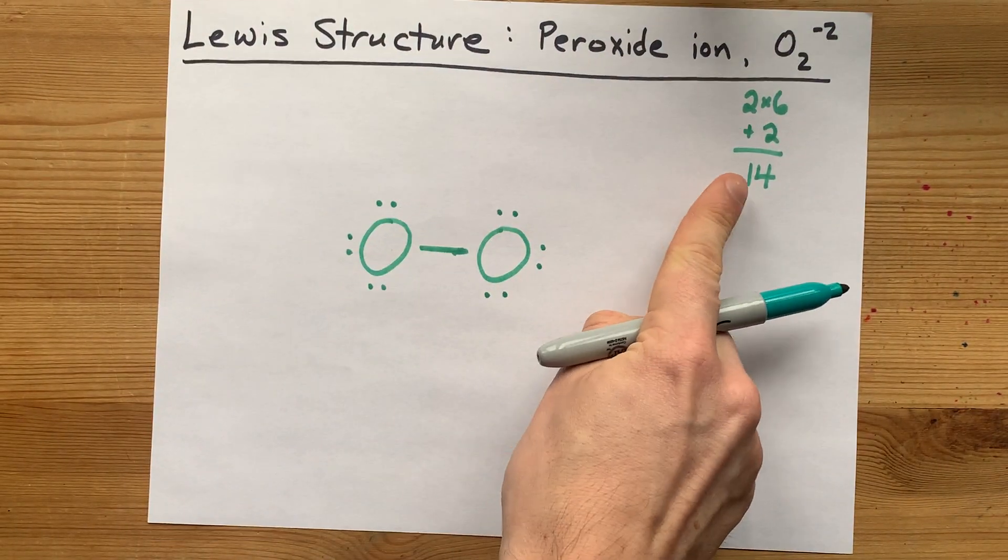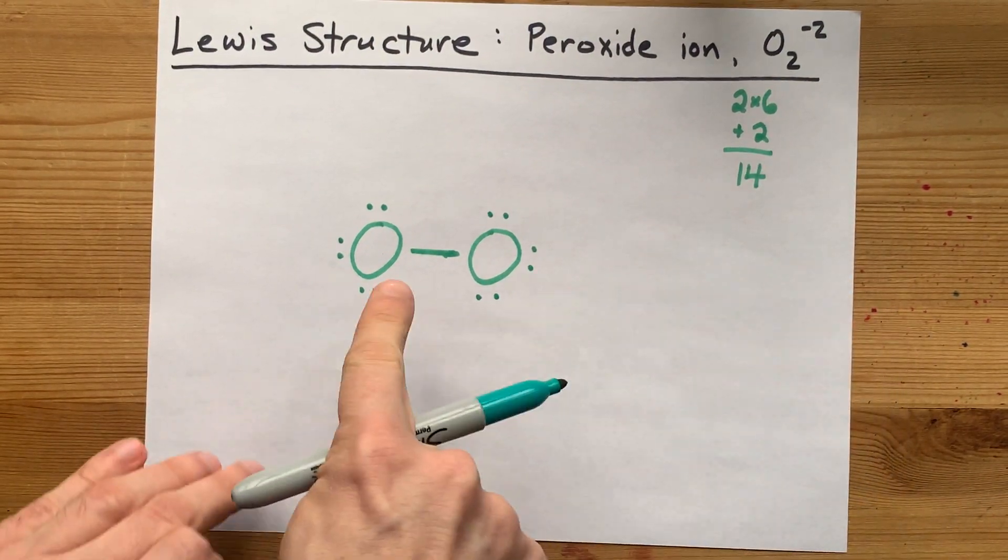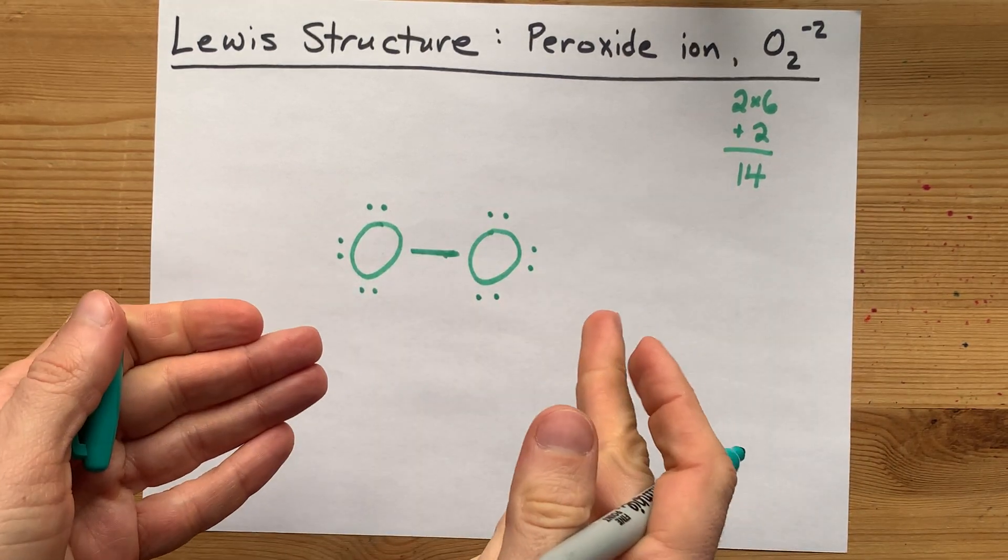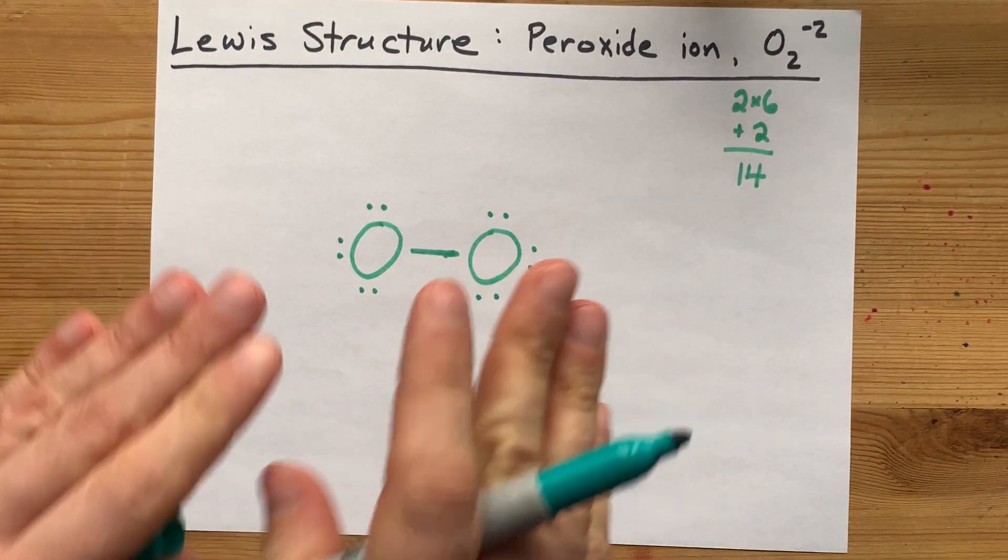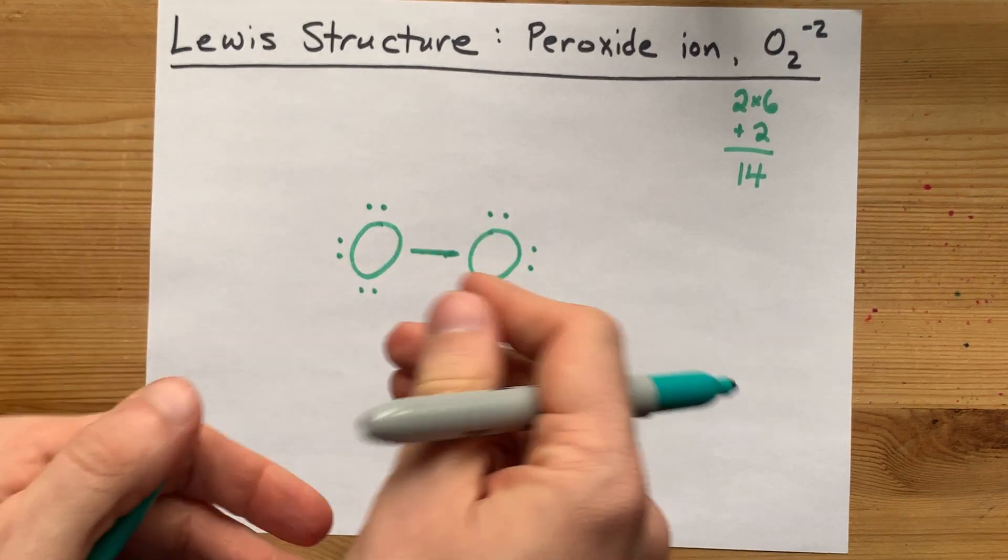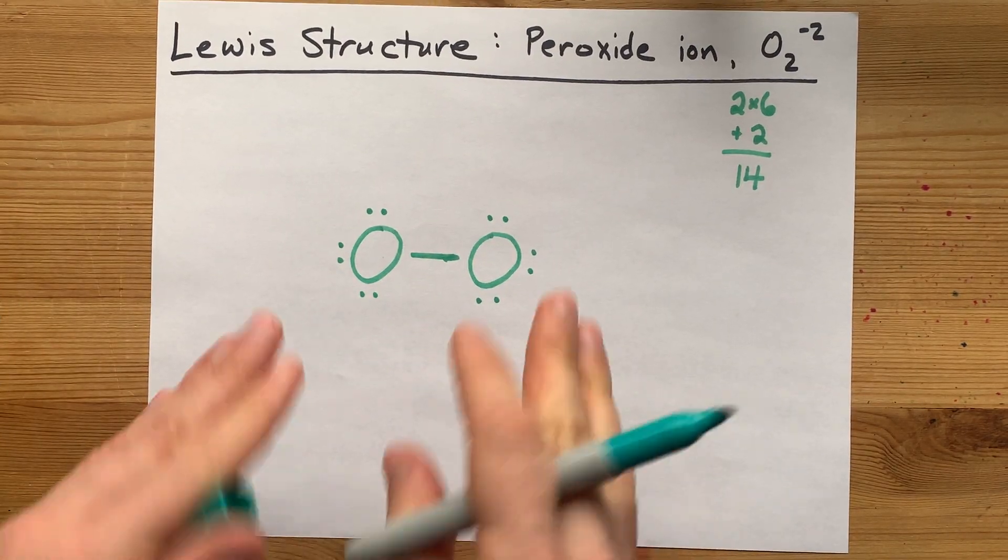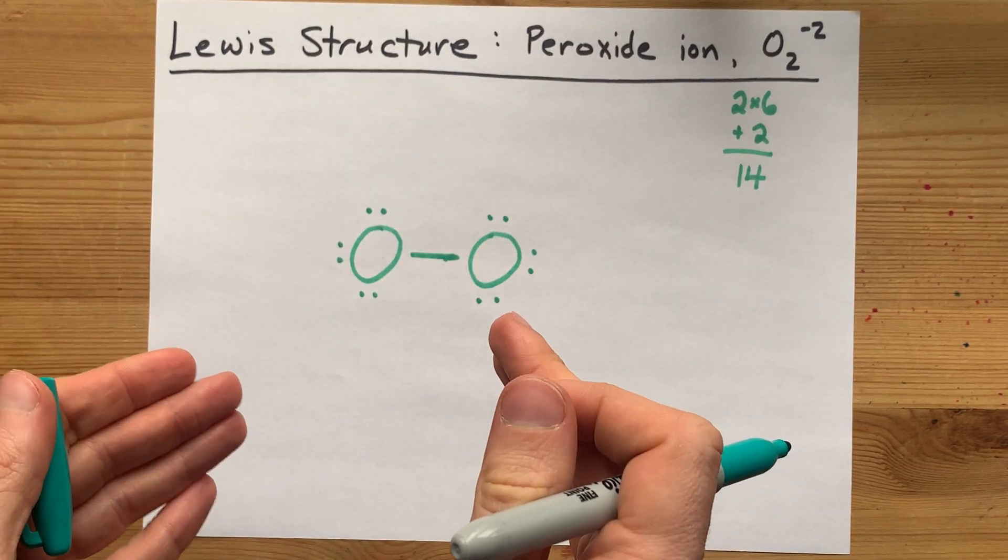That's all the electrons that I need, and I've already satisfied the octet rule for both of these atoms. So I don't have to make any changes by moving electrons around. We're almost done with the completed Lewis structure.